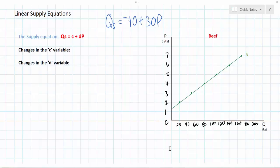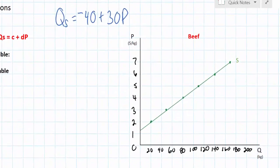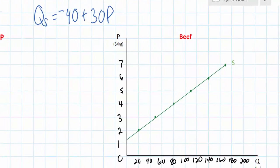In our last video we learned how to derive a supply equation using the data in a supply schedule or on a supply curve. We used the supply for beef in that video and we derived the equation that we see here representing the supply of beef at a range of prices in a particular period of time.